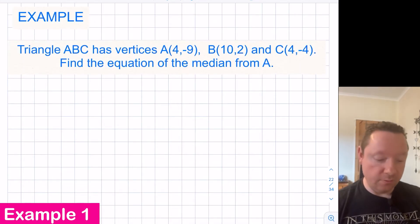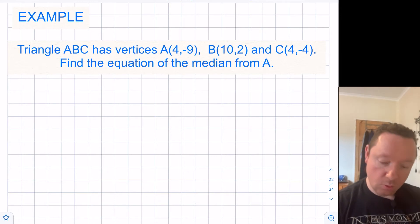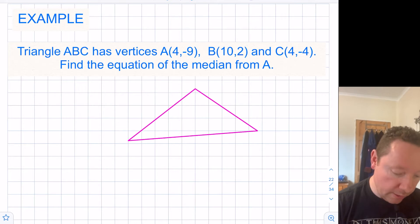First example says triangle ABC has vertices A(4, -9), B(10, 2) and C(4, -4). Find the equation of the median from A. So I might as well just draw a triangle to see what I'm looking at. It doesn't have to be exact, it doesn't have to be accurate, it can just be any old triangle just to give me an idea.